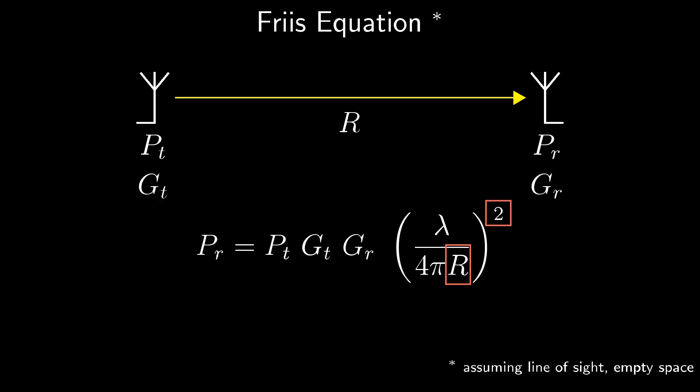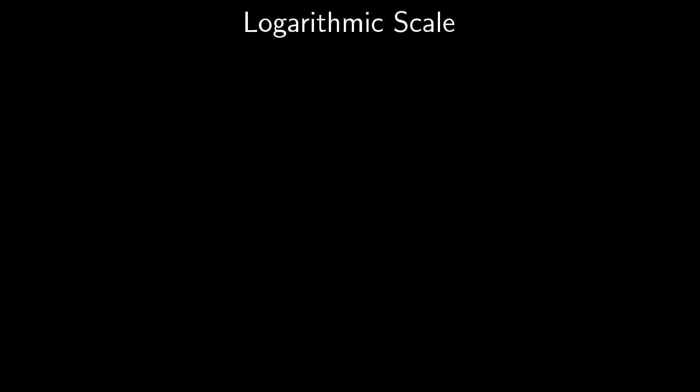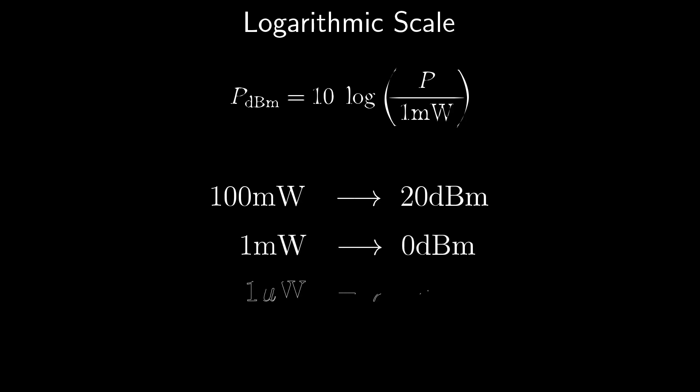So good actually, that we commonly use the logarithmic decibel scale in order to describe tiny power levels. In order to convert some power level into decibel milliwatts, or dBm for short, you just have to take 10 times the decadic logarithm of the signal strength in milliwatts. This way, 100 milliwatts become 20 dBm, 1 milliwatt becomes 0 dBm, and 1 microwatt becomes minus 30 dBm.